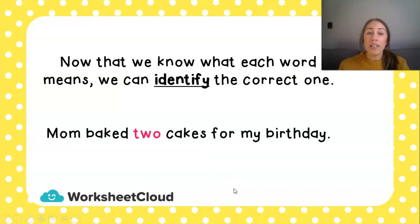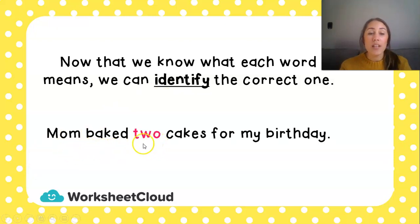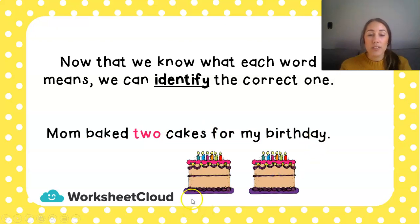Now that we know what each word means, we can identify the correct one. Remember, identify means we look for or find the correct one. So we know it is: mom baked two — the number two — cakes for my birthday, because they are my two cakes.